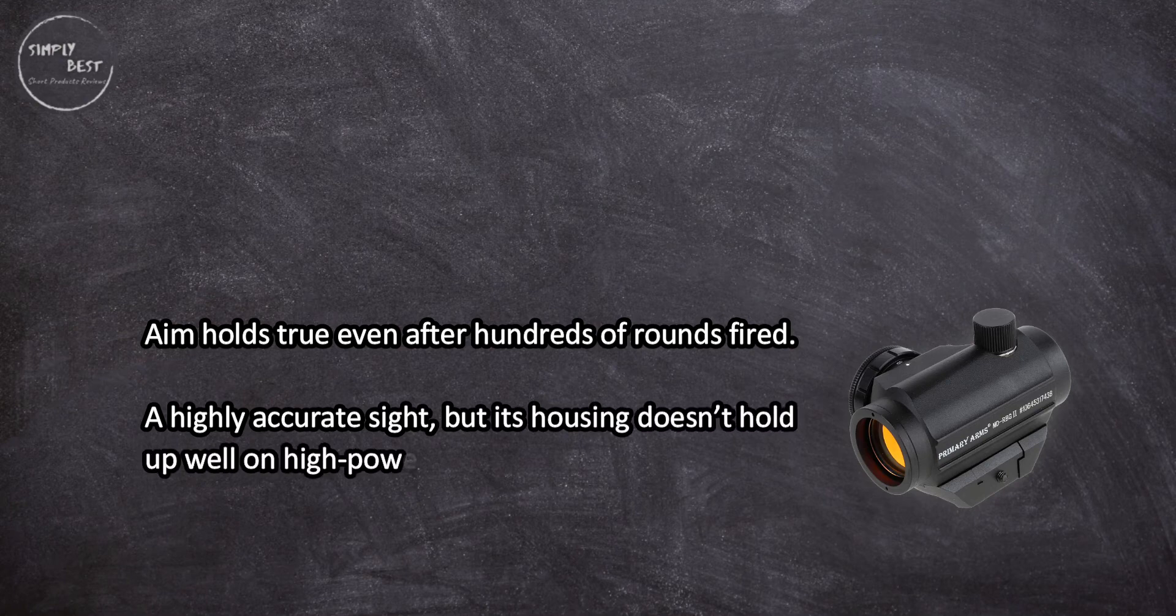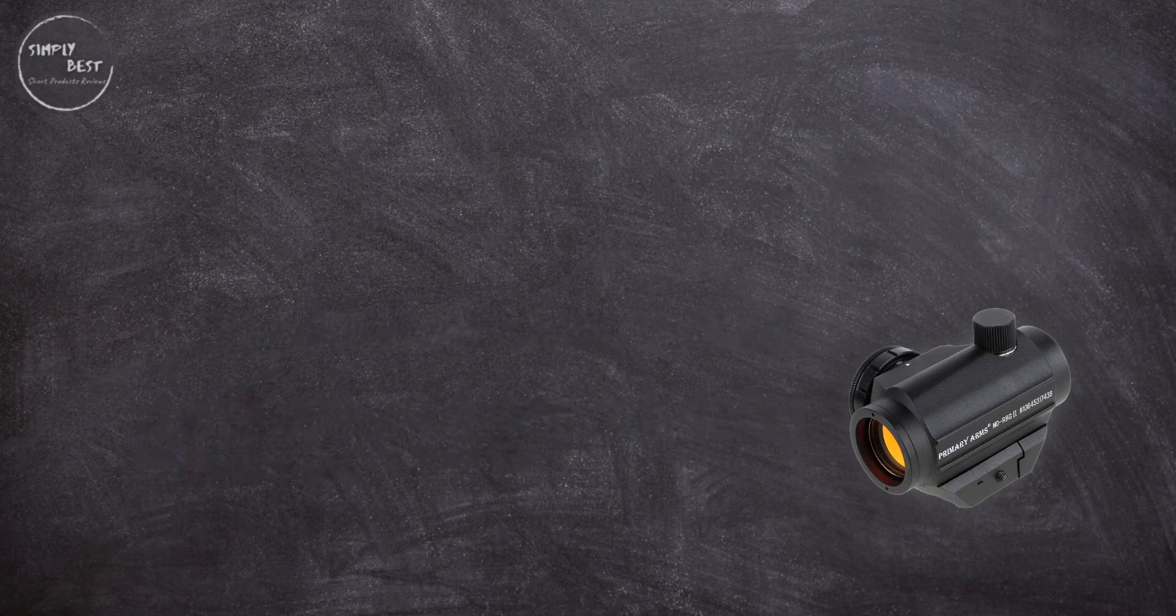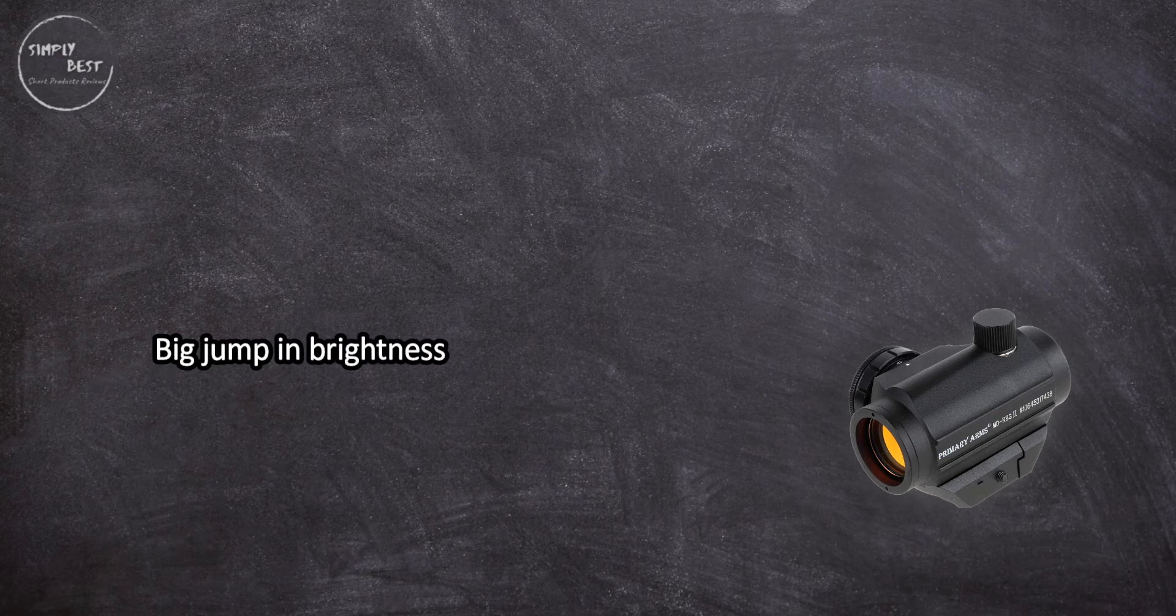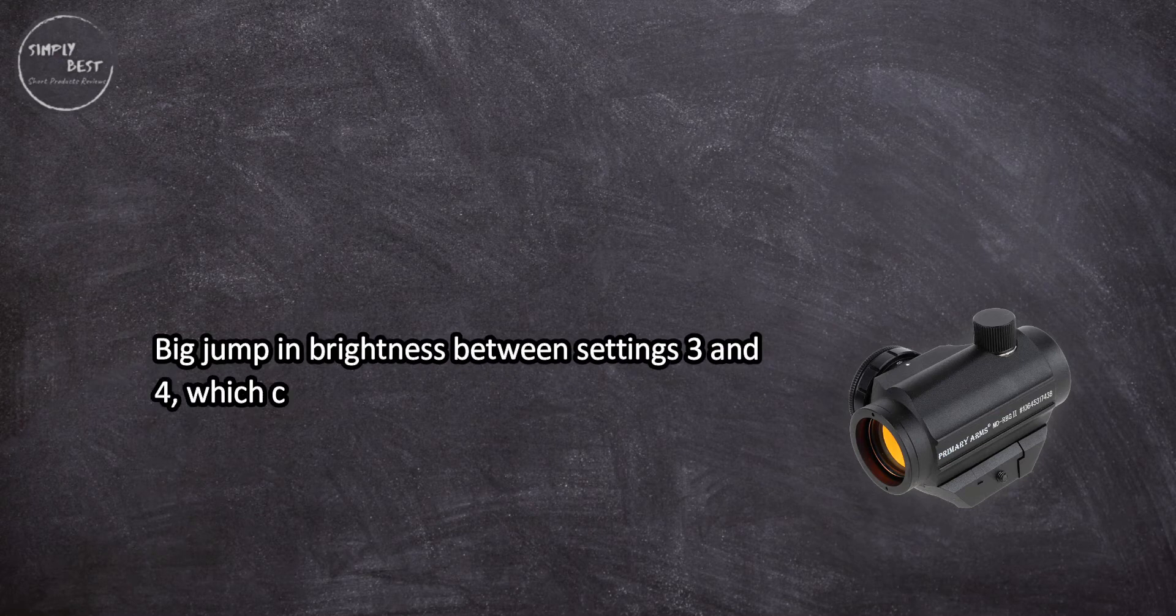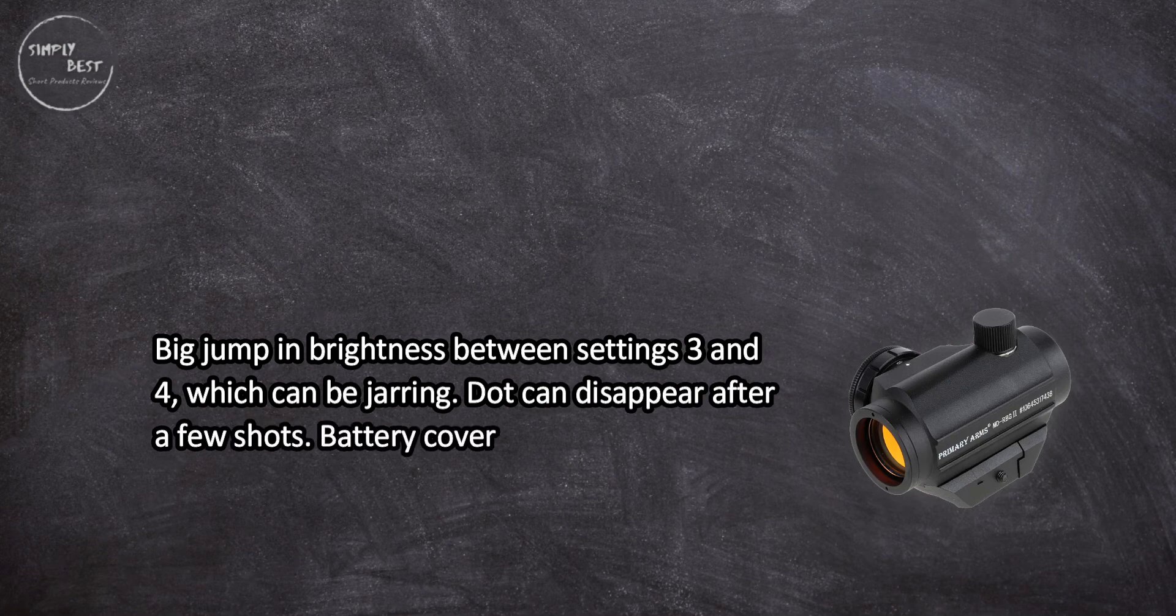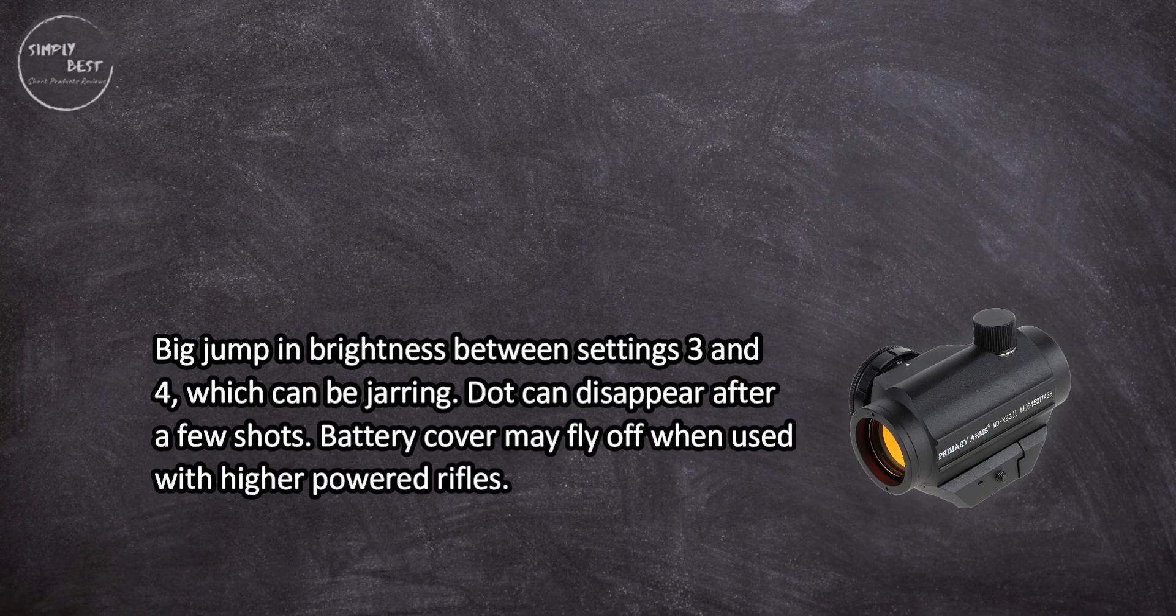Big jump in brightness between settings three and four, which can be jarring. Dot can disappear after a few shots. Battery cover may fly off when used with higher powered rifles.